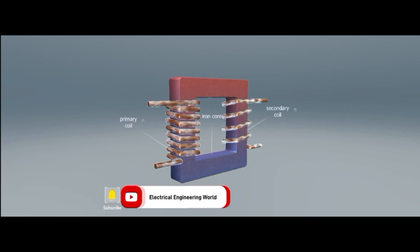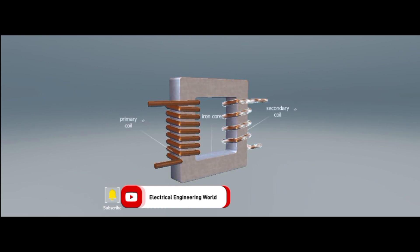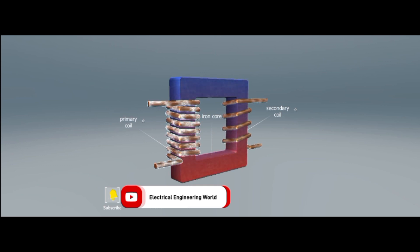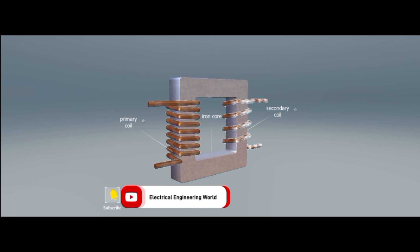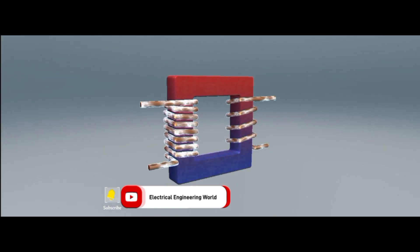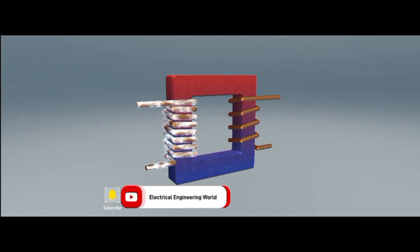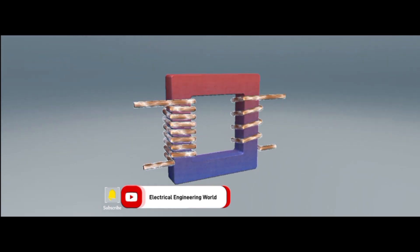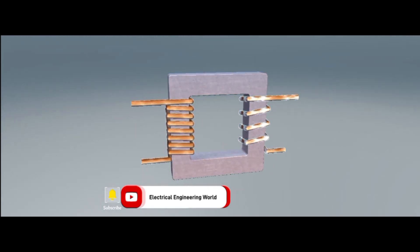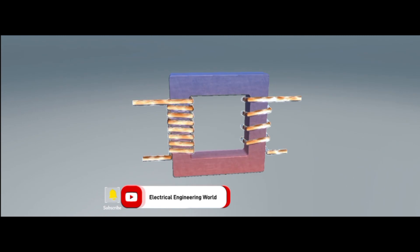The ratio of the primary to secondary voltages is equal to the ratio of the number of turns in the primary coil to that in the secondary coil. Therefore, when the number of turns in the secondary coil is half of that in the primary coil, the voltage is decreased to half of its former value.